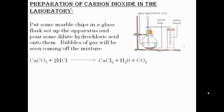As we add the hydrochloric acid, bubbles of gas can be seen coming off the mixture. The gas collects and is identified as carbon dioxide. The reaction involves calcium carbonate (CaCO₃) reacting with hydrochloric acid (HCl), and the products formed are calcium chloride and carbon dioxide.